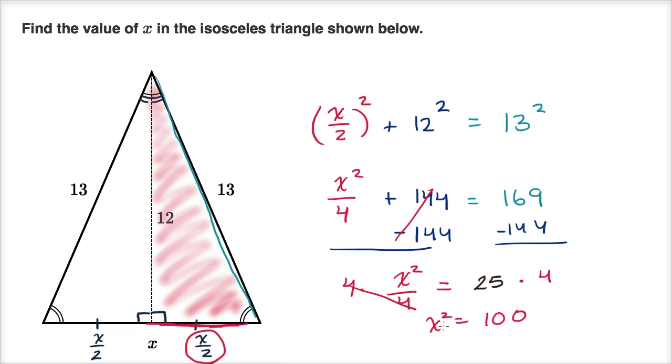Now if we were just looking at this purely mathematically, you'd say x could be positive or negative 10. But since we're dealing with distances, we know that we want the positive value of it. So x is equal to the principal root of 100, which is equal to positive 10.